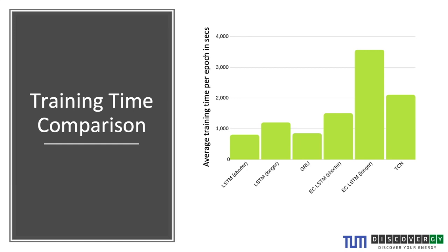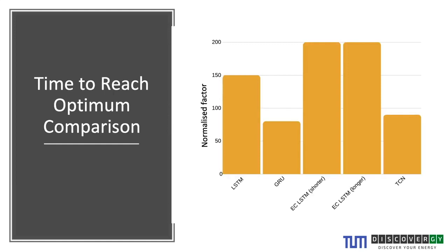Looking at training time per epoch, the GRU takes roughly as much time per epoch as the shorter LSTM. The TCN takes a little more time per epoch, but an important consideration is time to reach the optimum. Even if a model takes 300 seconds per epoch, if it requires 10,000 epochs it is not a good model. So we also compare the number of epochs and total time taken to reach the optimum for each network.